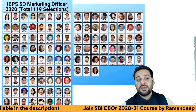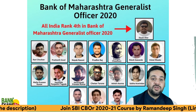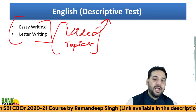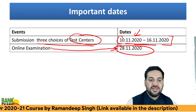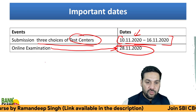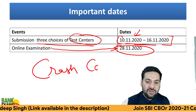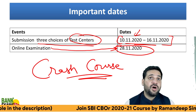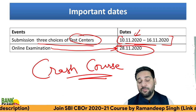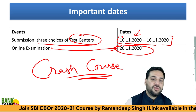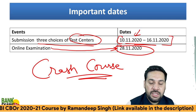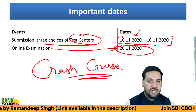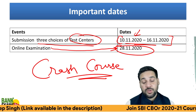We have 500 plus selections in 2019-20. Students who cracked IBPS SO Marketing, RRB Scale 2, Bank of Maharashtra, Bank of Baroda, and Vijaya Bank took our courses. I know you don't have that much time — the exam is on 28th of November, so this is a crash course. Instead of searching for the correct study material, we are providing it to you on the spot. Everything is ready for you. Just go to the description — the link is available there.